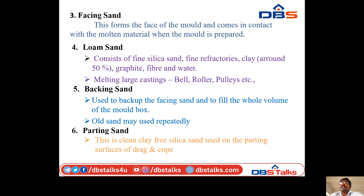Facing sand: the facing of the mould comes in contact with the molten metal when the mould is prepared — this is called facing sand. Loam sand consists of fine silica sand or fine refractories, clay around 50%, graphite, fibre, and water. It is used for melting large castings such as belts, rollers, pulleys, etc. Backing sand is used to back up the facing sand and fill the whole volume of the mould box.